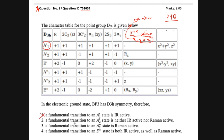Option B says a fundamental transition to A2-dash is IR active. Looking at A2-dash, there is no X, Y, or Z, so it is IR inactive. For Raman activity, we look at the fourth column for quadratic functions. A2-dash has no quadratic function either, so it is neither Raman active. There is no X, Y, or Z, so it is neither IR active. Option 2 seems to be the correct option.